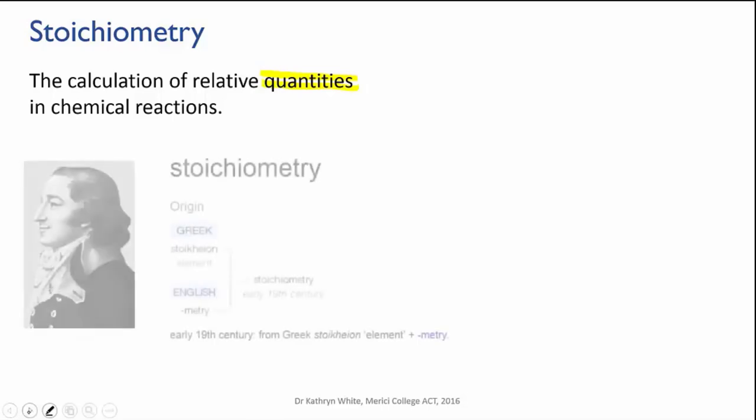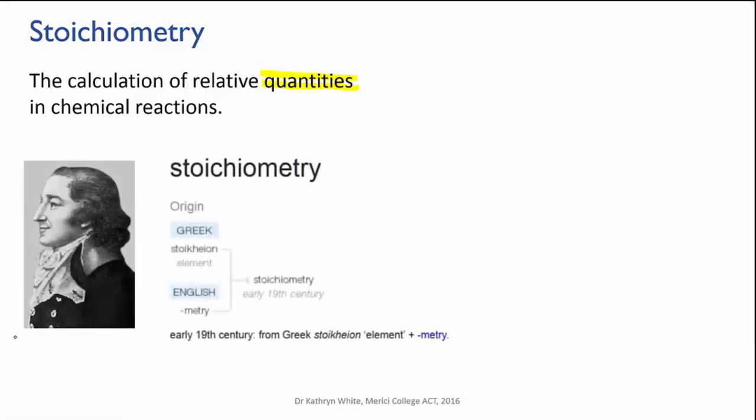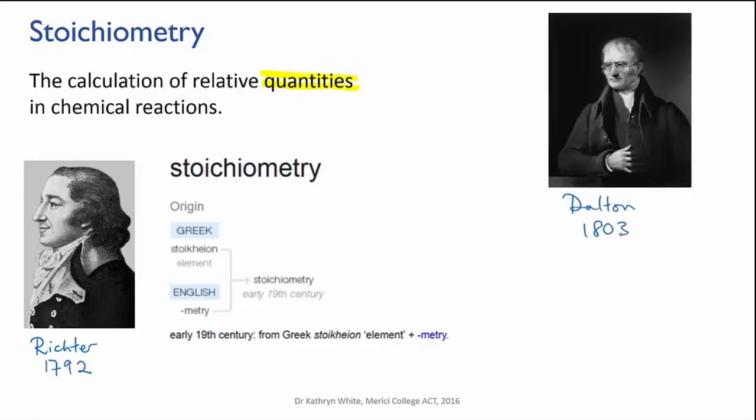The term is stoichiometry. It was coined in the late 18th century by a German chemist called Jeremias Richter, who, about a decade before Dalton published his theory of atoms,